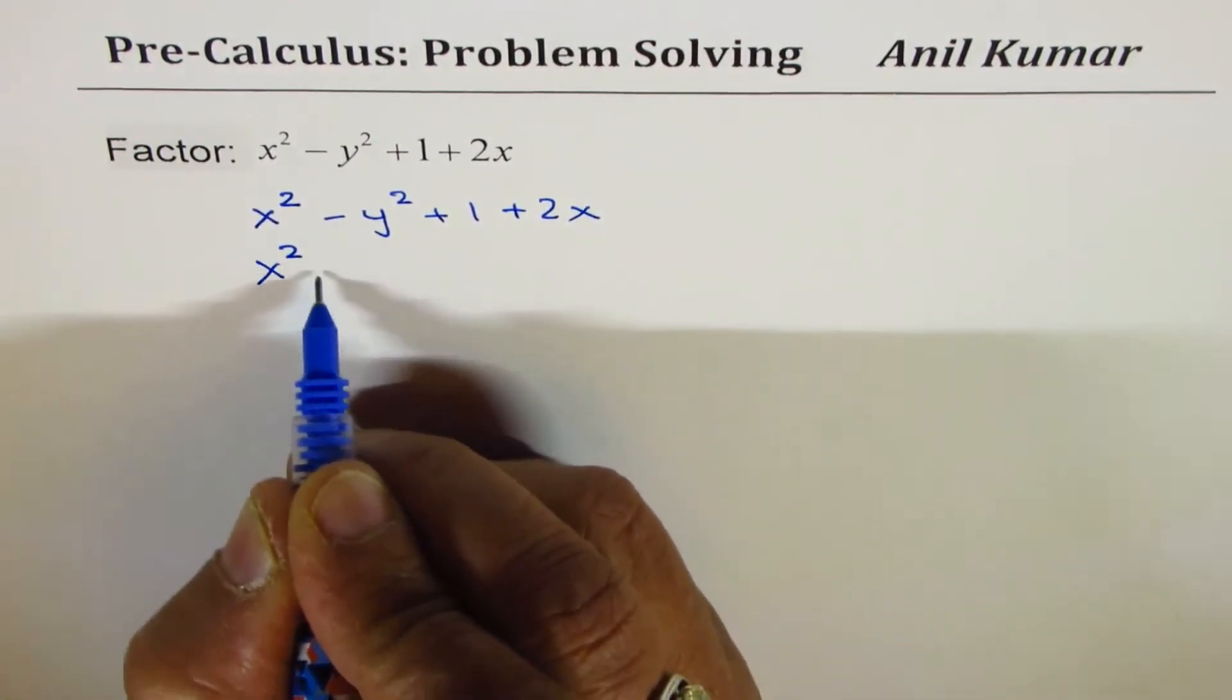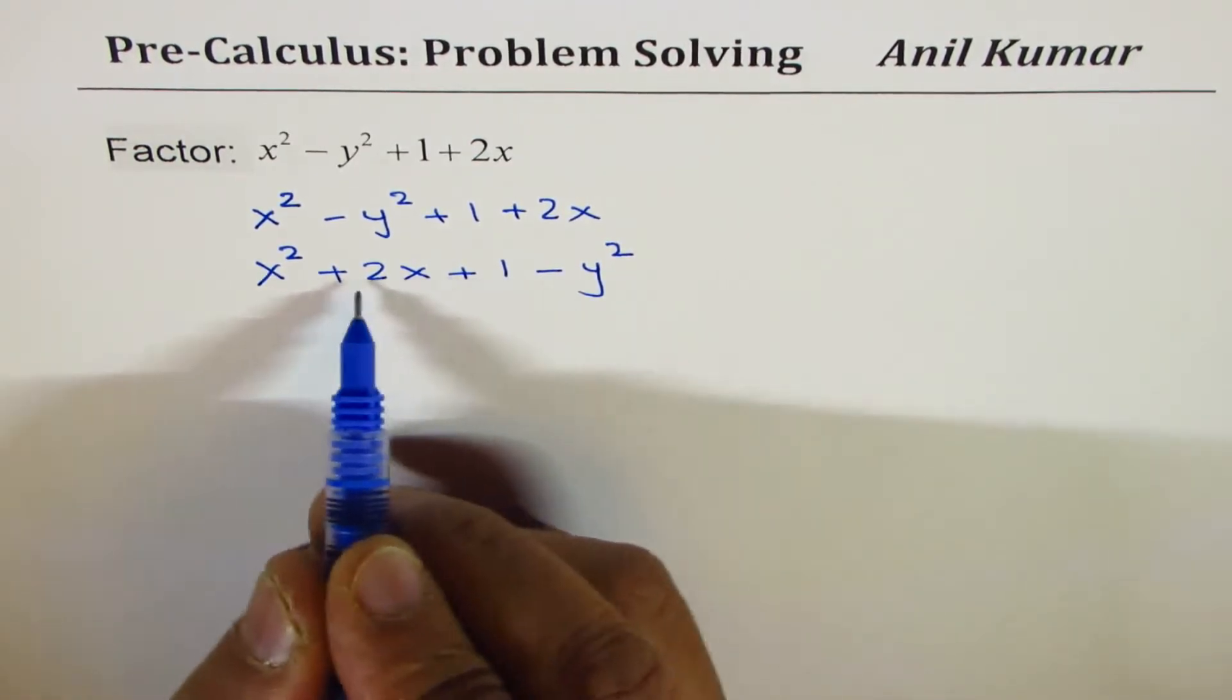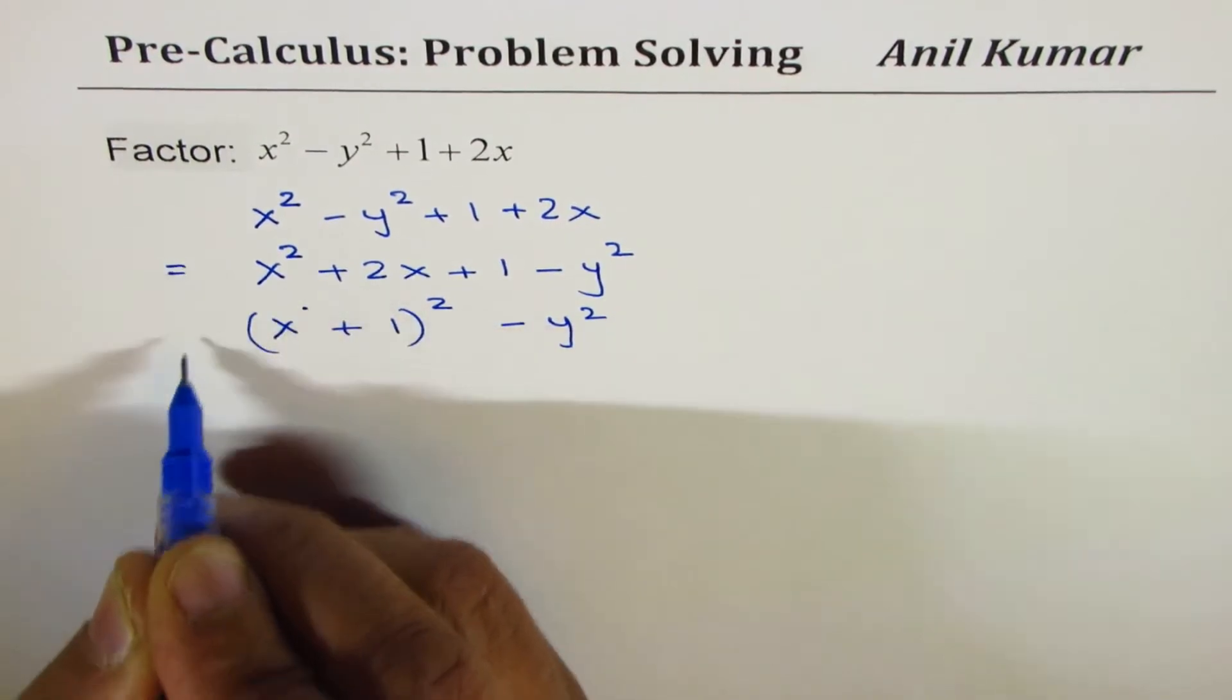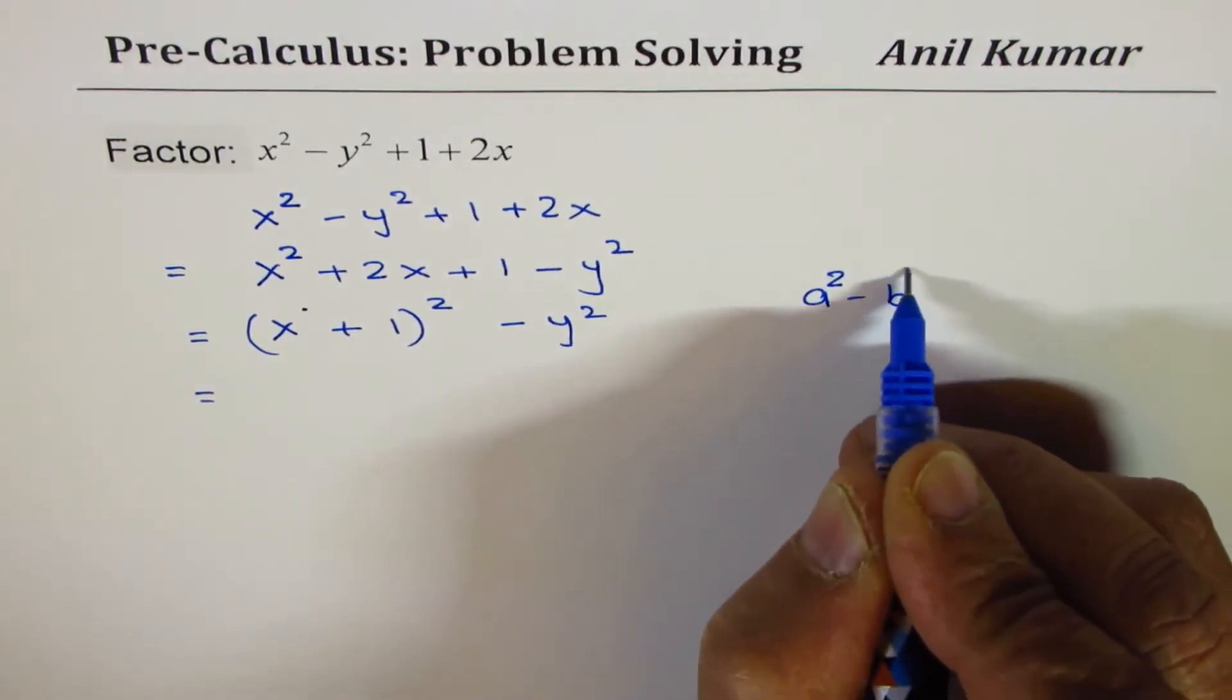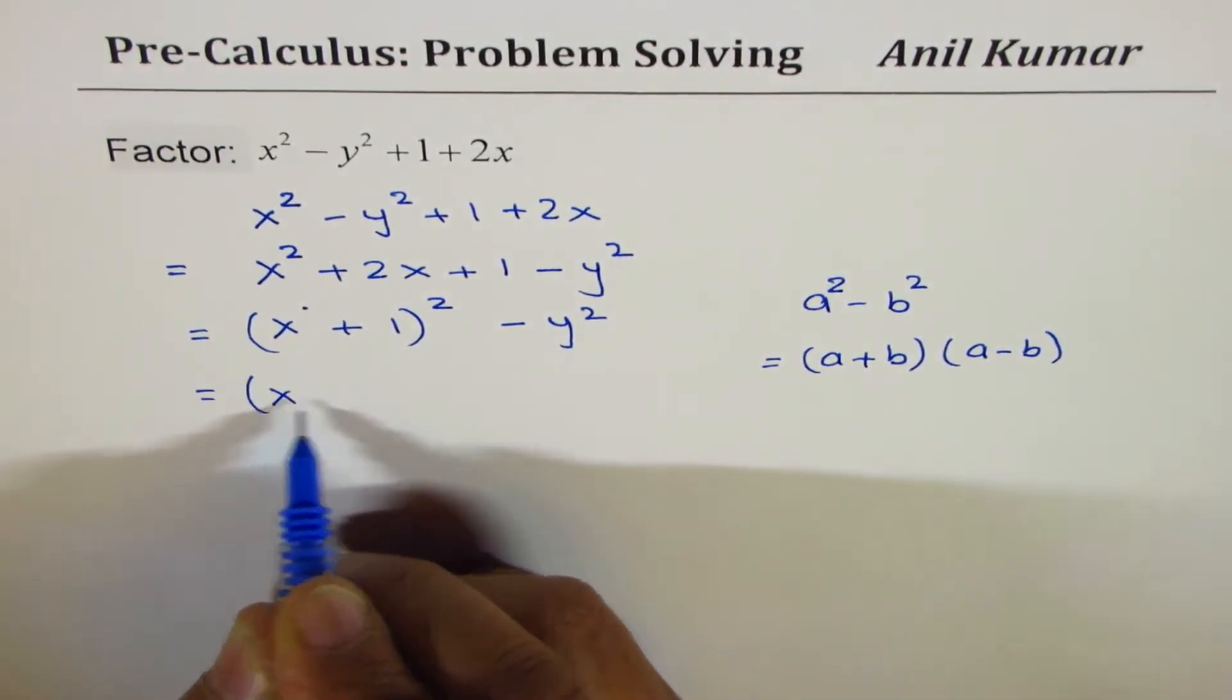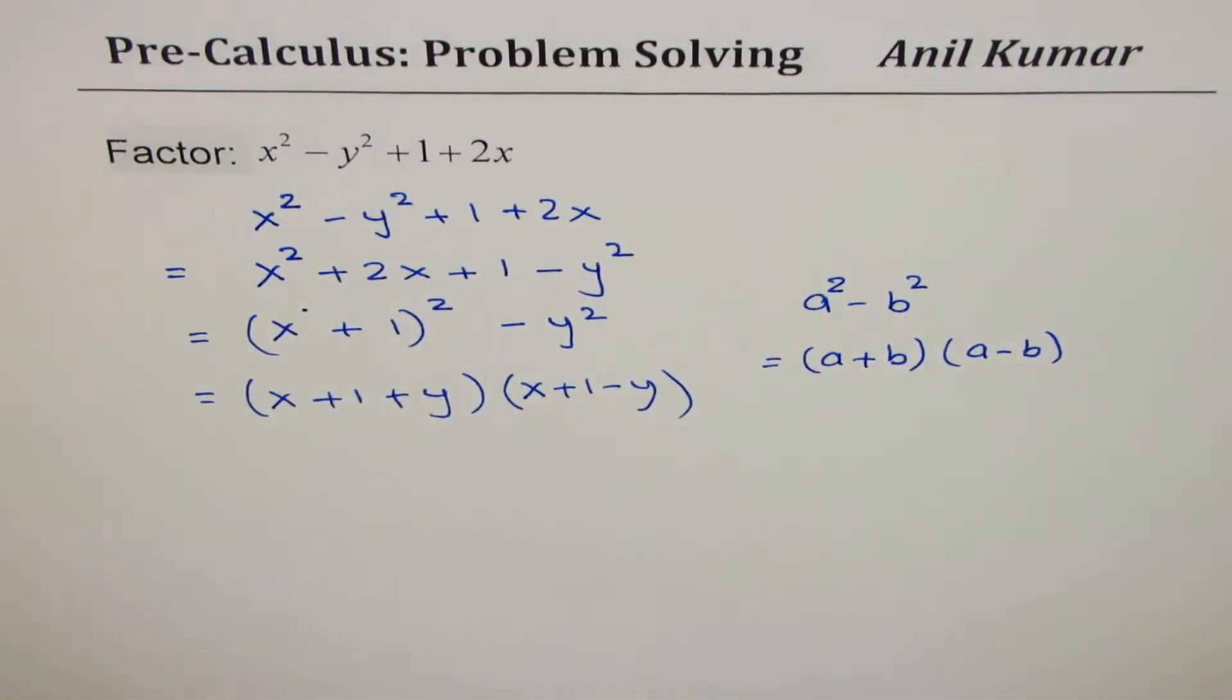You see this -y² and all these three terms could be treated as a trinomial. So what I will do here is I'll rewrite this question. Let me just copy it first as x² - y² + 1 + 2x. So I'll rewrite this as x² + 2x + 1 - y². Now first three terms become a perfect square which could be written as (x + 1)², and we have -y². Now you can apply difference of squares. I hope you remember a² - b² = (a + b)(a - b). So we could write this as (x + 1 + y)(x + 1 - y). So that is how we can factor it.